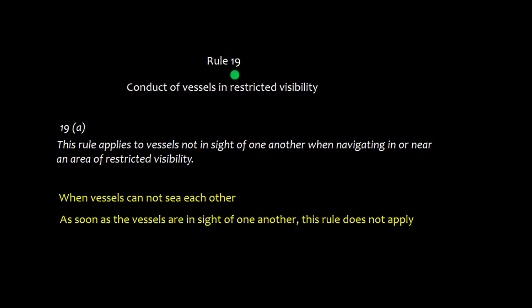Rule 19 is about conduct of vessels in restricted visibility. Rule 19a says that this rule applies to vessels not in sight of one another when navigating in or near an area of restricted visibility.